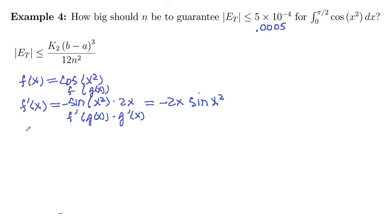And we need another derivative, f double prime of x. And negative 2x sine of x squared, we're going to consider that as a product, use our product rule. So we need f prime g plus f g prime.